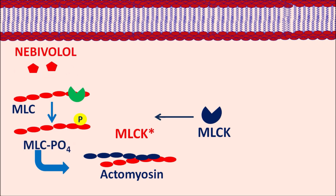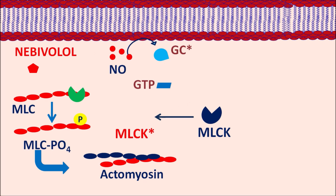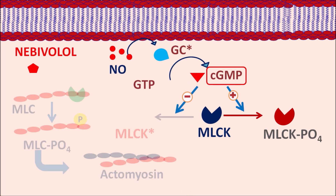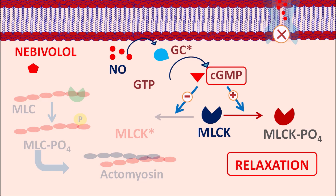Nebivolol is a drug which can release nitric oxide so that this nitric oxide produces vasodilation. Nitric oxide can stimulate the guanylyl cyclase system, converting GTP into another secondary messenger, cyclic GMP. Cyclic GMP can convert MLCK into its phosphorylated (inactive) form, and it can also block the activation of MLCK so that it can prevent contraction. It even inhibits the entry of calcium in the vascular smooth muscle. All these actions result in relaxation and vasodilation, which reduces blood pressure. By these two actions, nebivolol is useful in the treatment of hypertension as well as heart failure.